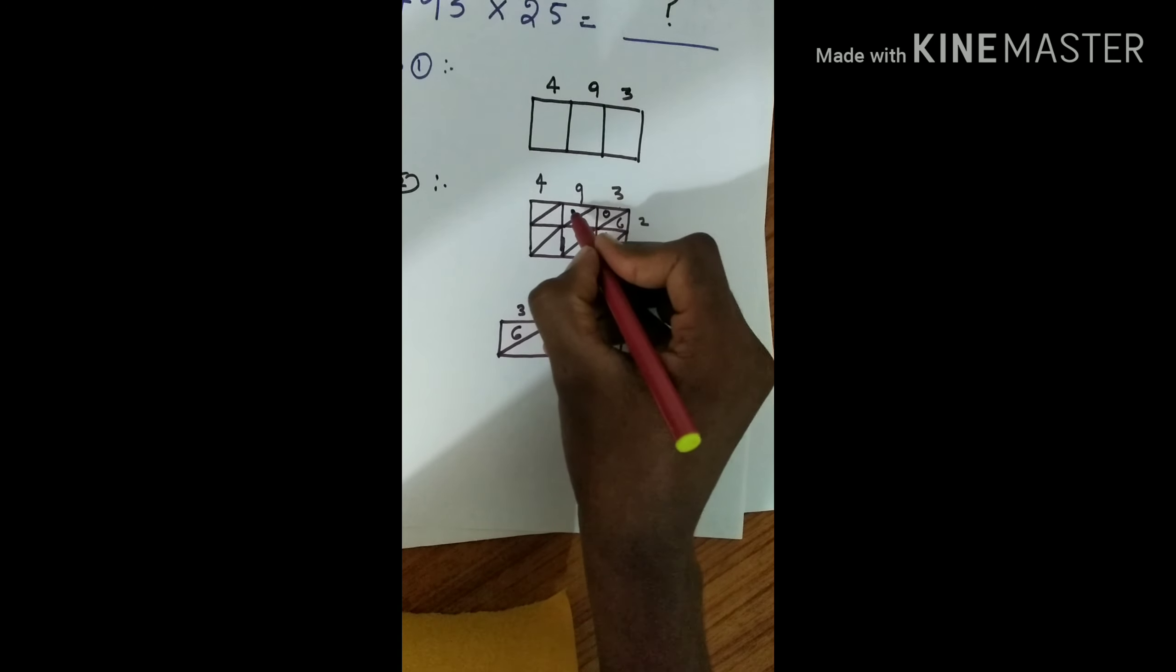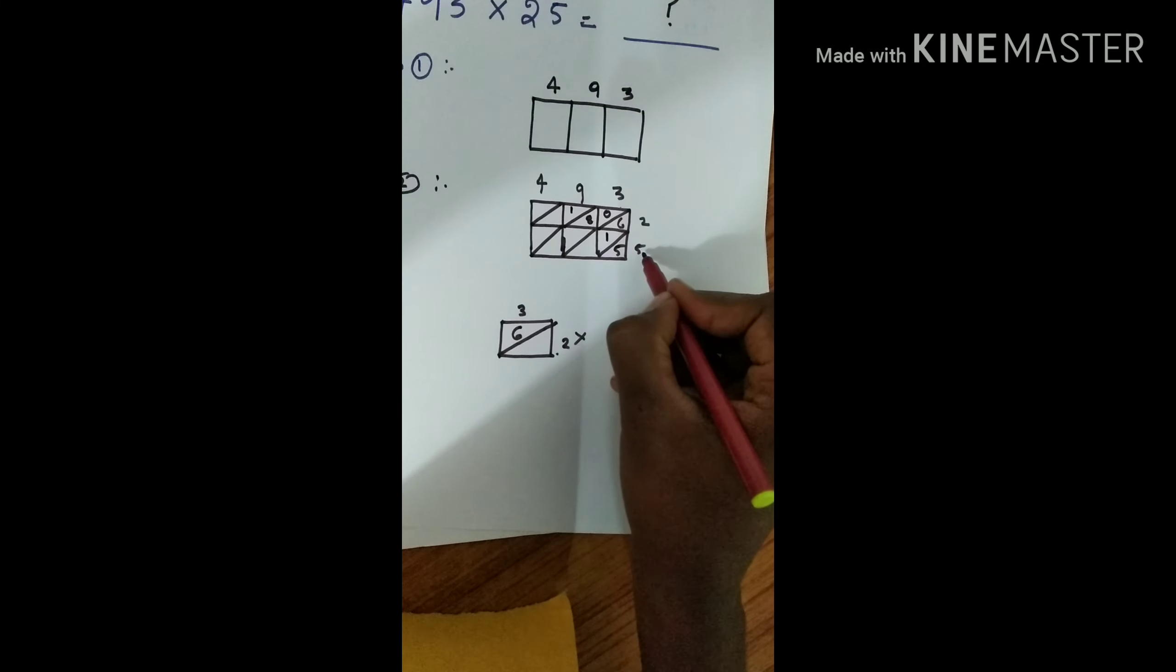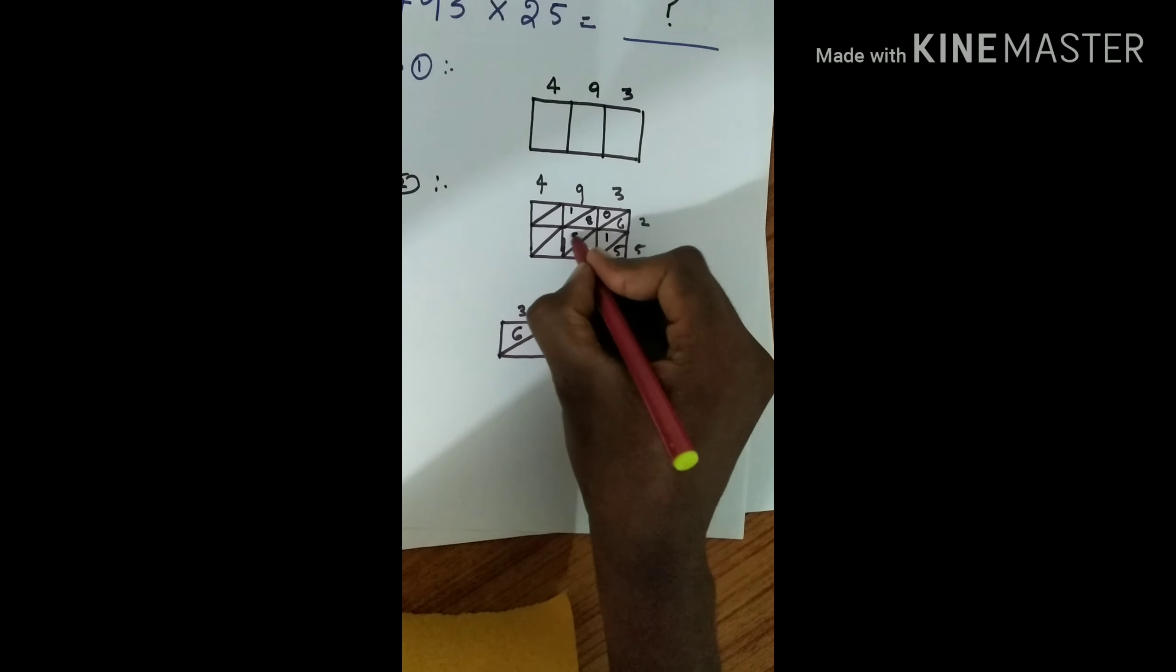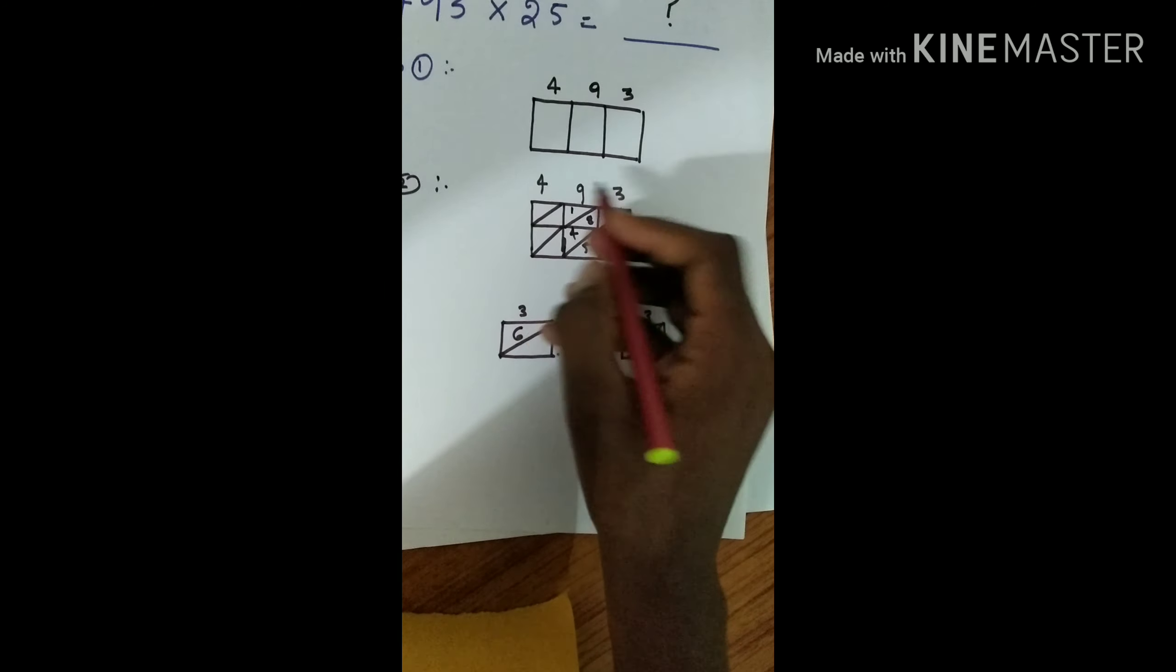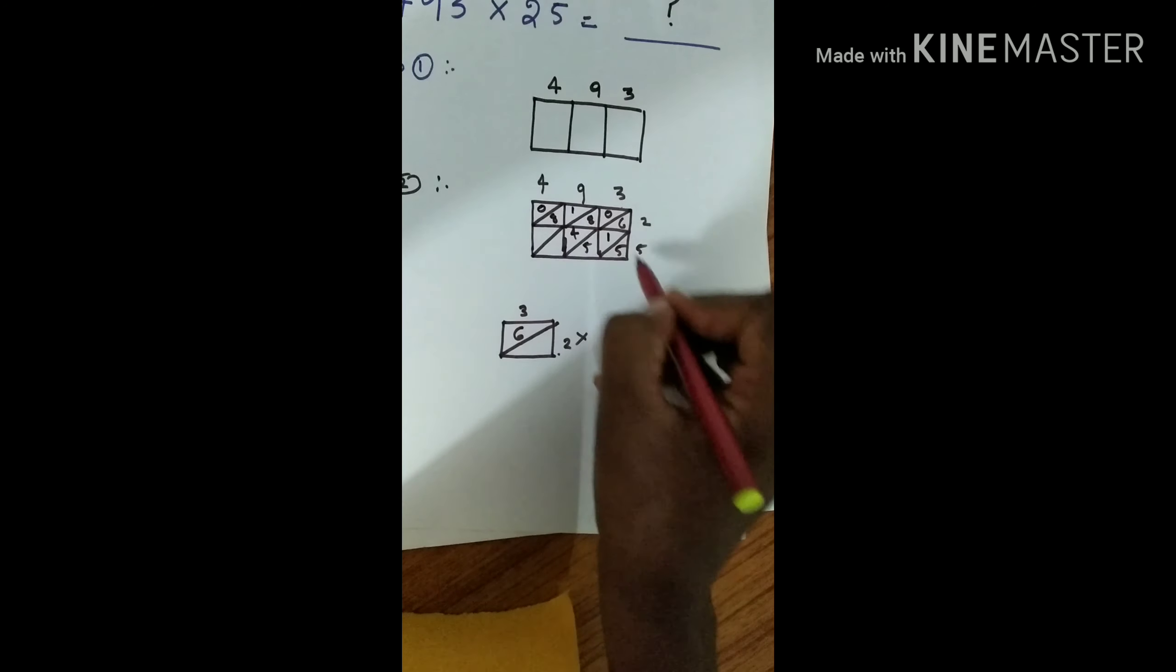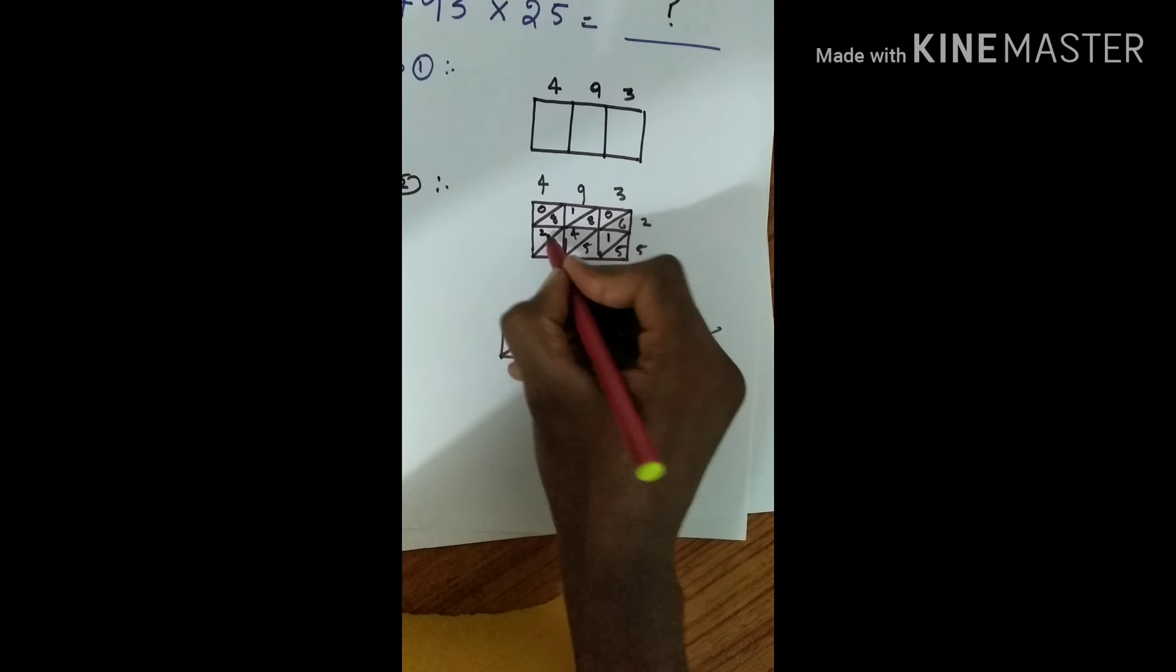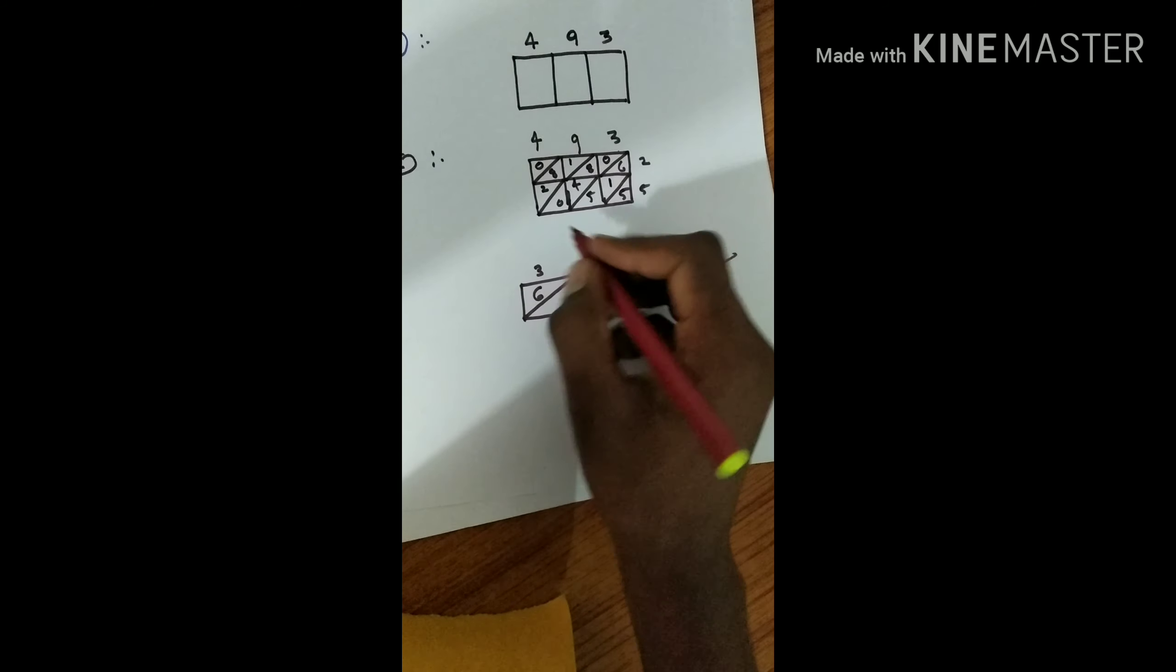Nine times five is forty-five, 4 and 5. Four times two is eight, 0 and 8. Four times five is twenty, 2 and 0. Now we got the answer.